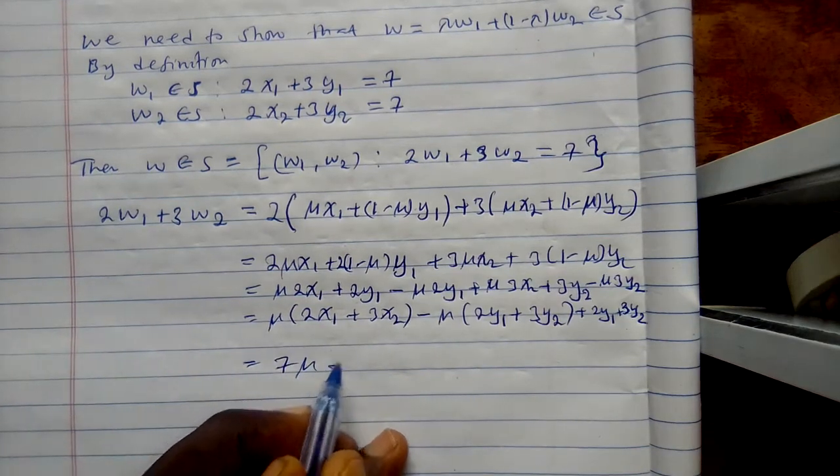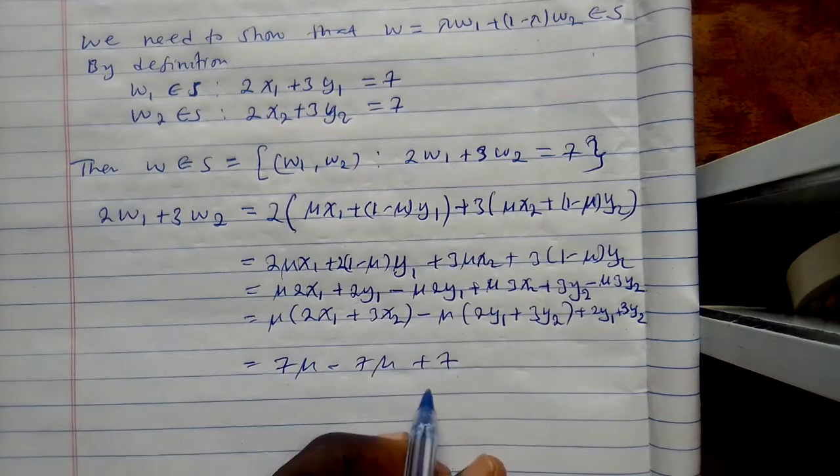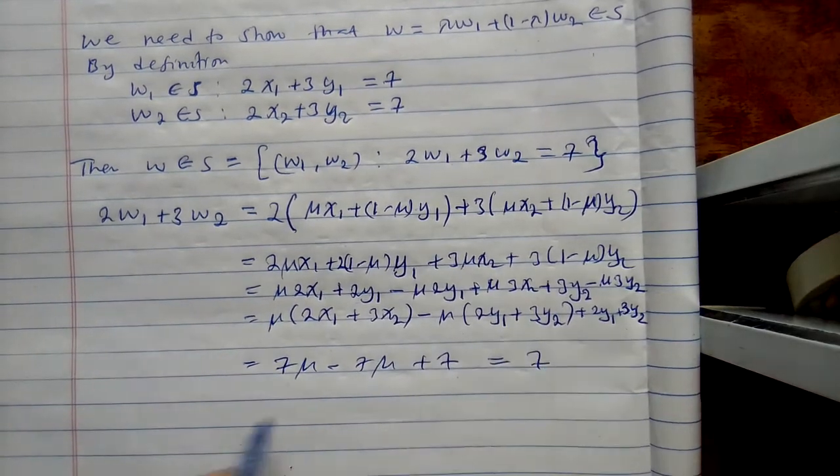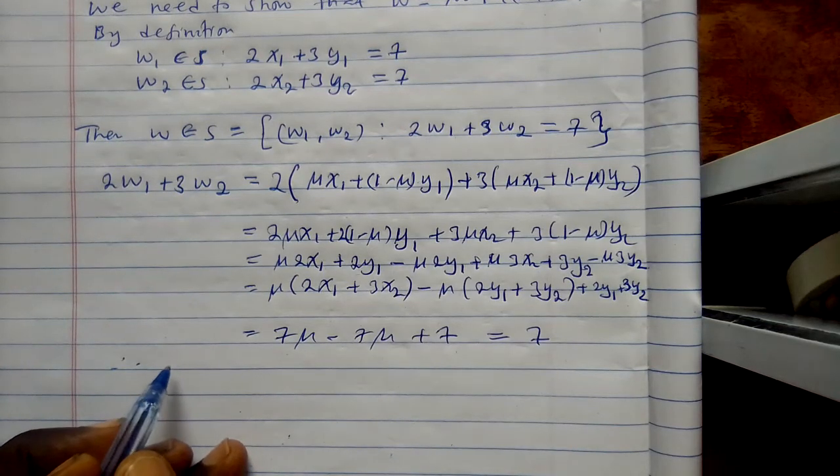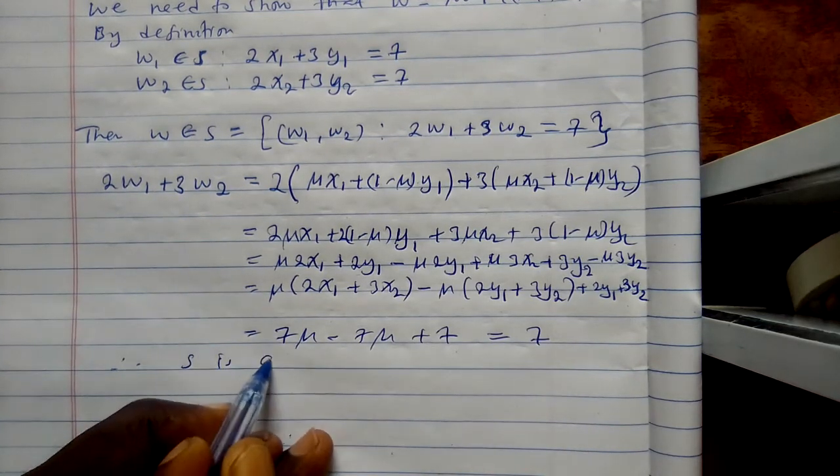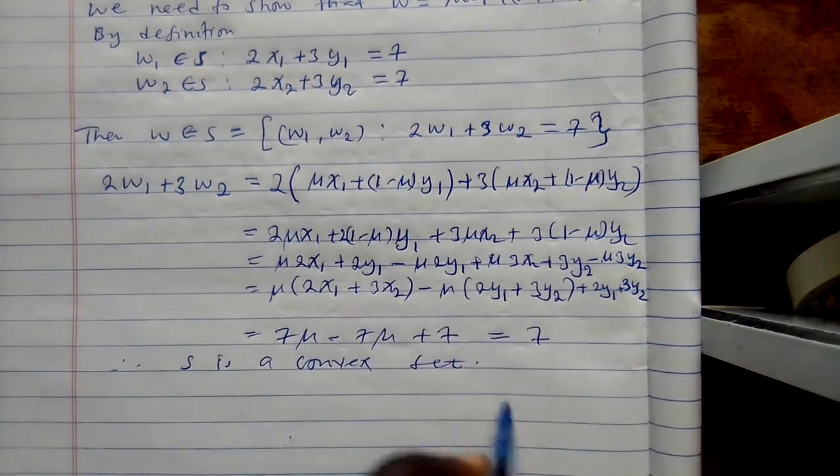So I have 7 mu minus 7 mu plus 7 which is equal to 7. Therefore, S is a convex set.